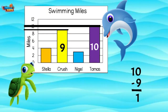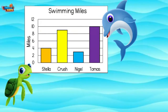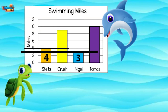How many miles did Stella and Nigel swim combined? Combined means to put together. We need to find Stella's miles swam and put it together, or add it to Nigel's miles. Stella swam 4 miles and Nigel swam 3 miles. I combined them to get 7 miles. I swam more miles than Stella and Nigel combined.